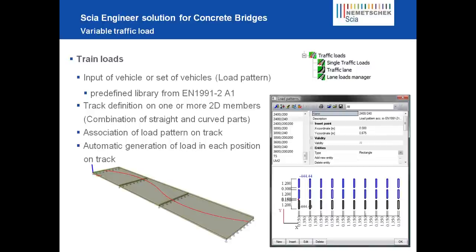Train loads work a bit differently – it is a bit more simple. You define a mobile track, place a unit load on it, and that unit load is multiplied by a load pattern that can be loaded from the library. That load pattern is placed on the track with a certain step in between – for example, each meter – and it creates multiple load cases: load case 1 with the mobile load at 1 meter, load case 2 at 2 meters, load case 3 at 3 meters, and so on.